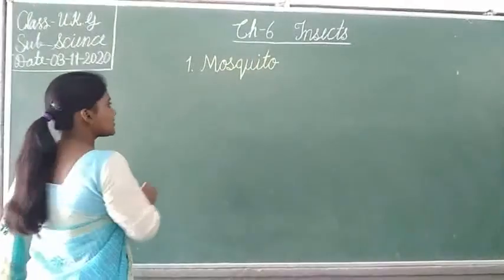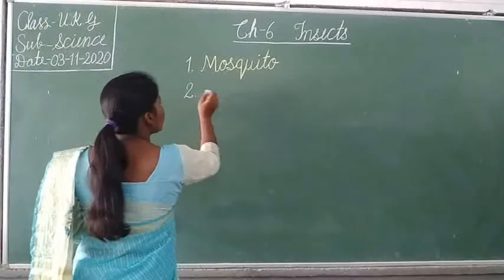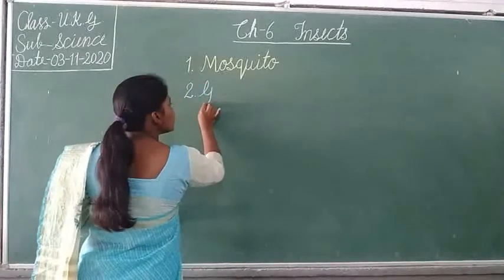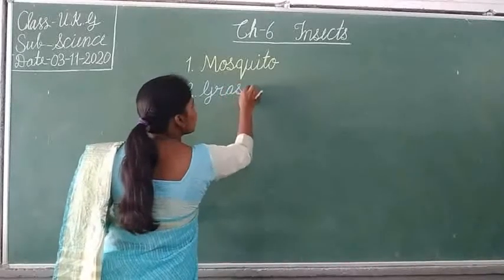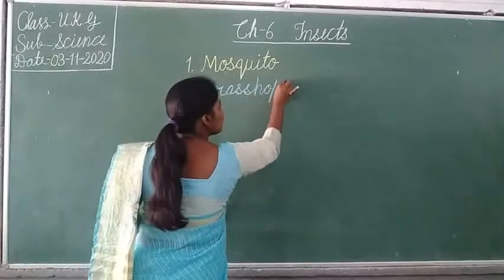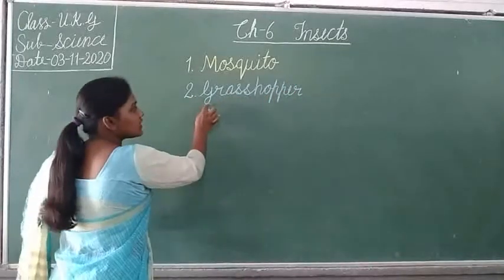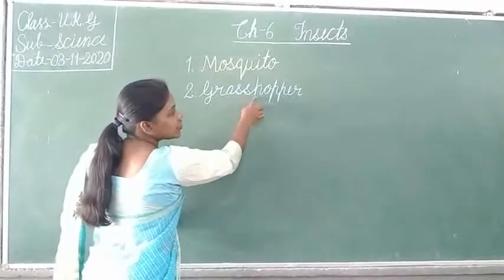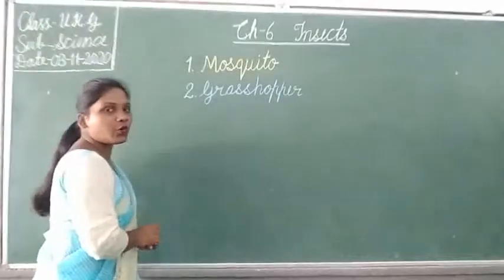Second is grasshopper. What is the spelling of grasshopper? G-R-A-S-S-H-O-P-E-R. Grasshopper.